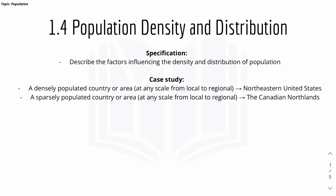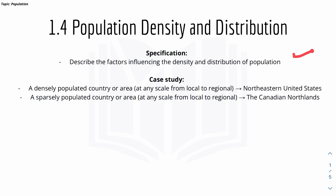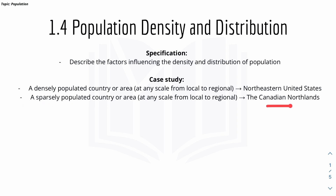Hey friends, my name is Yi and welcome to a new video for IGCSE Geography. Today we have 1.4 for population density and distribution. In this video we have two case studies: number one, a densely populated country or area, which is the Northeastern United States, and number two, a sparsely populated country or area, which is the Canadian Northlands.